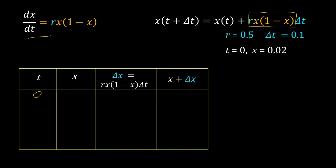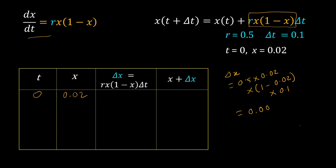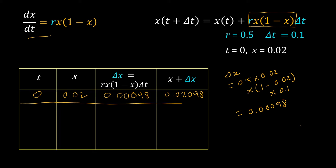At t = 0, x is 0.02. Let me calculate delta_x for this value of x. This will be r = 0.5, times x = 0.02, times (1 - 0.02), times delta_t = 0.1. I have done the calculation — it comes to 0.00098. Let me put that value in the cell. Filling the column for x + delta_x by summing x and delta_x, we are done with the first step of Euler's method.